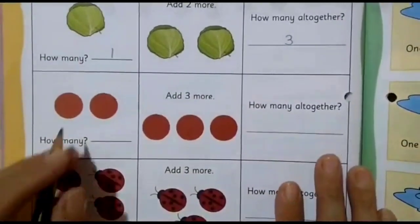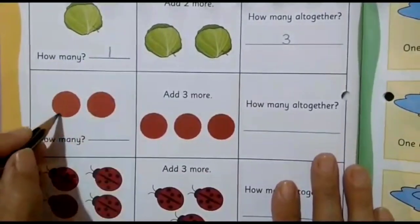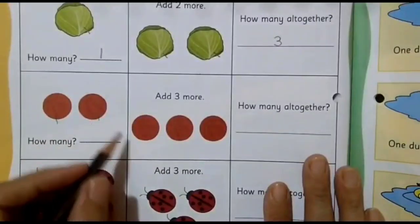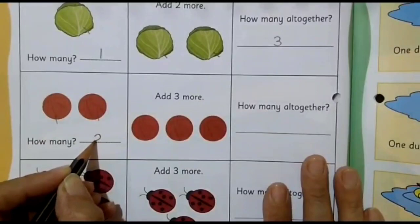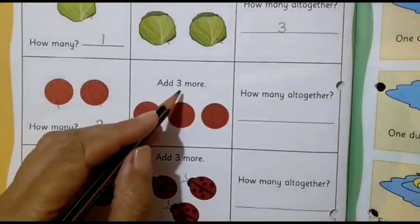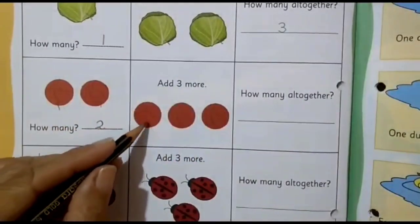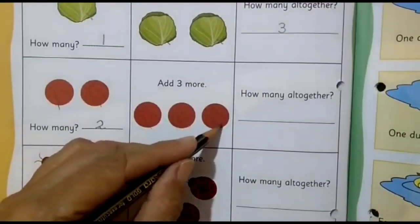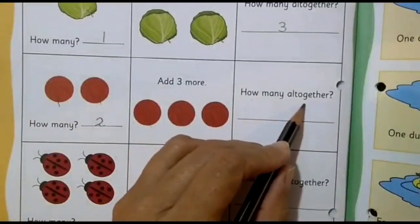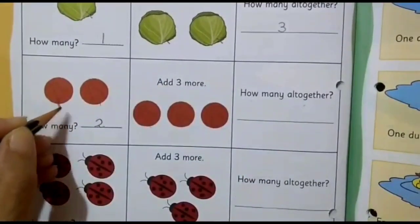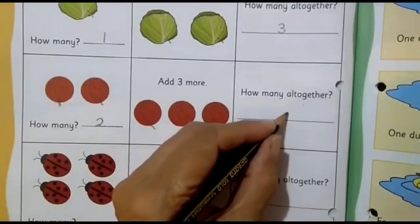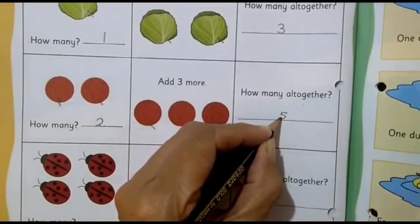Let's move to the next one. How many balls can you see here? You can count like this: one and two. So number two will come here. Here it is written add three more — one, two and three. The question is how many all together. Let's count once more: one, two, three, four and five. So number five will come here.